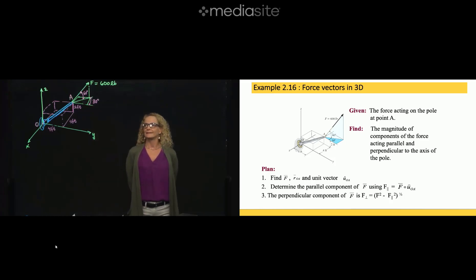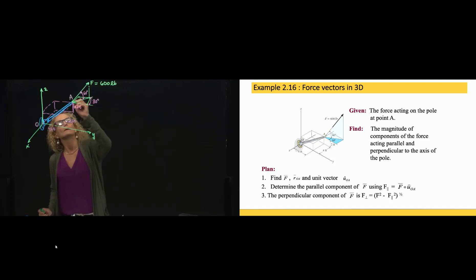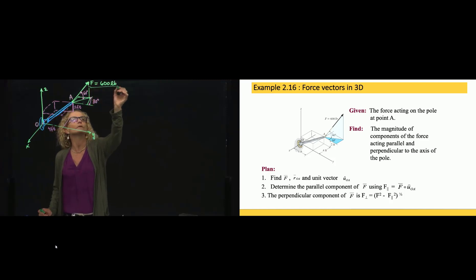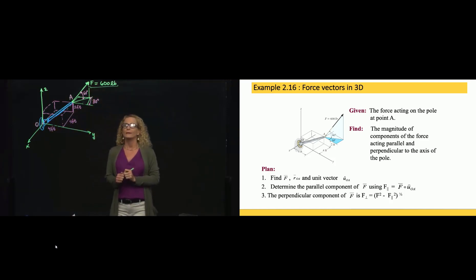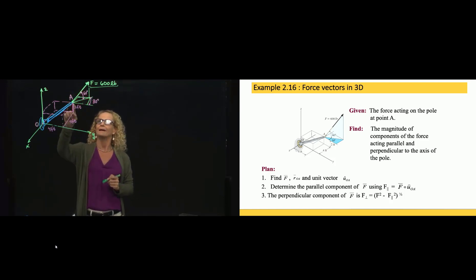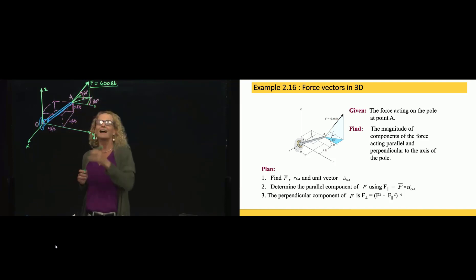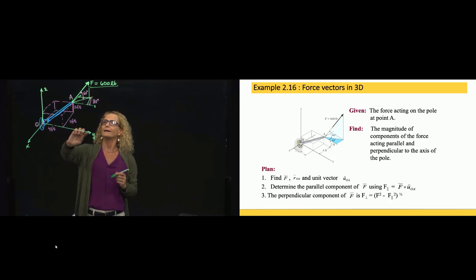This is problem 216. We have a force F that goes along this line, and we are given the magnitude — the magnitude of that force is 600 pounds. They tell us that this force has an angle of 60 degrees with the plane. These lines here indicate this is parallel to Y and parallel to X, so they are giving us the angle between the force and the plane Y-X.